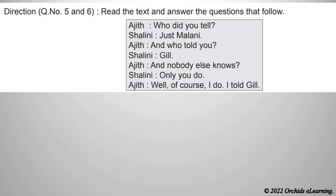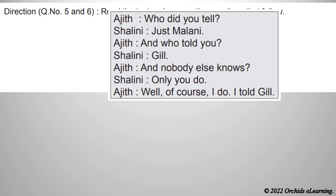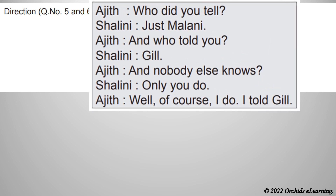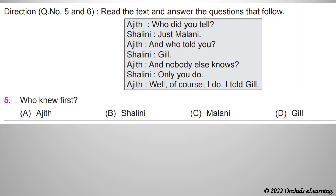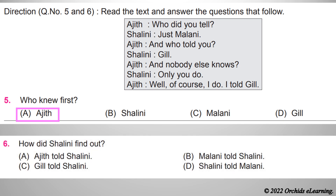Direction for Questions 5 and 6: Read the text and answer the questions that follow. Read the given conversation. Question 5: Who knew first? Answer: A - Ajit. Question 6: How did Shalini find out? Answer: C - Gil told Shalini.